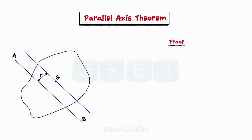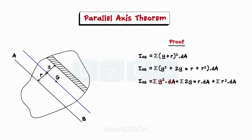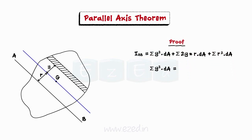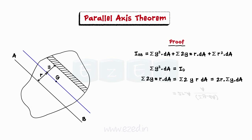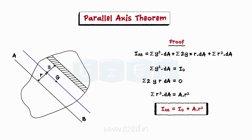Let us now prove this theorem. Consider an element strip of area dA located at a distance y from the centroidal axis. We can find the moment of inertia of the plane area about the axis AB using the basic definition, that is, area of the strip multiplied by distance squared. Analyzing the three terms in the expression: the first term equals the moment of inertia about the centroidal axis, IG. The second term — summation y·dA upon A — is the distance of the centroid from the centroidal axis, which is zero, since the centroidal axis passes through G. The third term simplifies to A·R². Therefore, IAB equals IG plus AR², thus proving the parallel axis theorem.